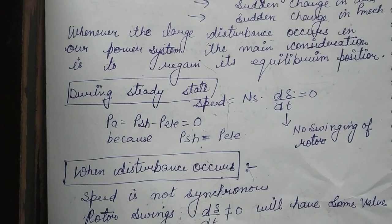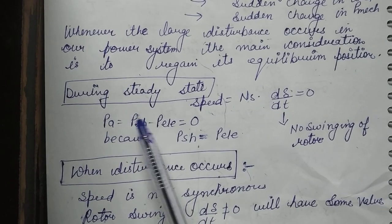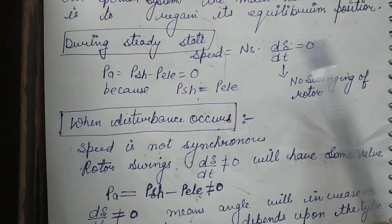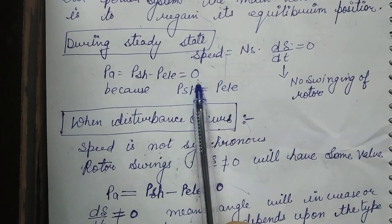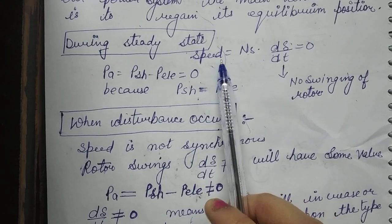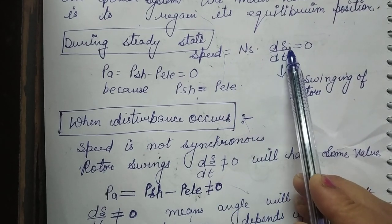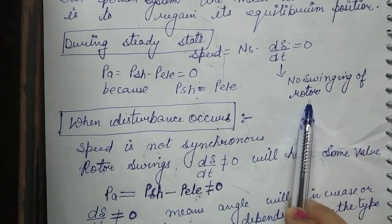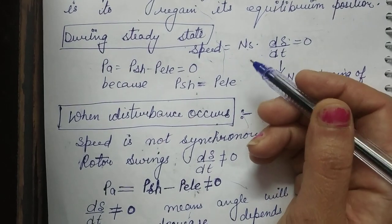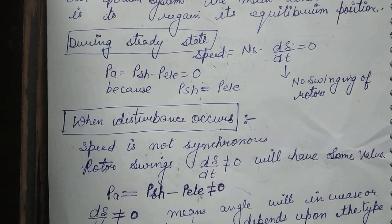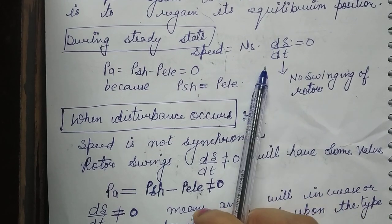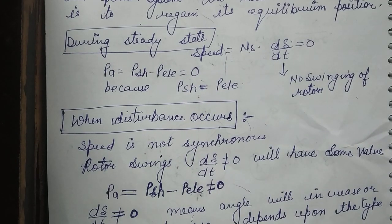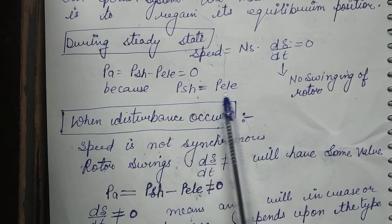Let's see how the swing equation helps us determine this condition. First, in steady state, we should know what is happening: the speed of our system is synchronous speed, meaning the change in rotor angle with respect to time is zero. When the rate of change of rotor angle is zero, the rotor does not swing — it is not accelerating or decelerating. It moves at its respective synchronous speed, and the acceleration power is zero, because mechanical power input equals electrical power output.